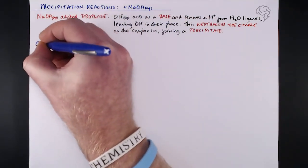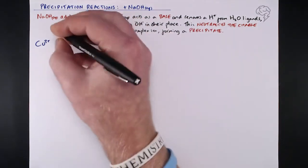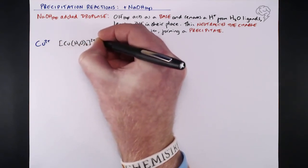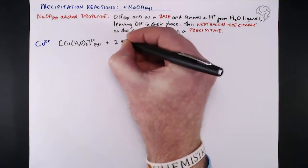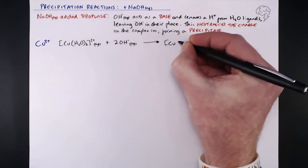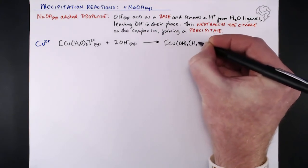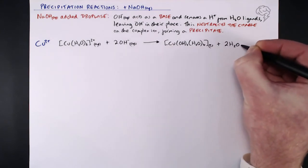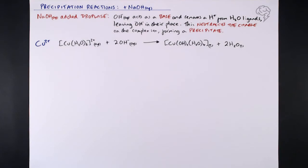First up, let's take a look at copper. As with all of these ions, we start with the hexa aqua complex — that's six water molecules acting as ligands in that octahedral complex. For copper 2+, it reacts with two hydroxide ions. Why two? Because it's got a 2+ charge. They take two hydrogen ions away from two of those water ligands, leaving two OHs behind, so we end up with [Cu(OH)₂(H₂O)₄]. Four of those water molecules remain untouched; two have had a hydrogen ion taken away, neutralizing the complex. It has no charge now because the two OH⁻ cancel it out — that's why it's a precipitate. The two OH⁻ have taken two H⁺, and we make two lots of water.